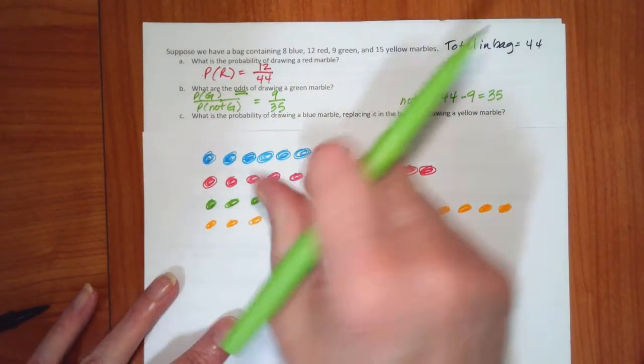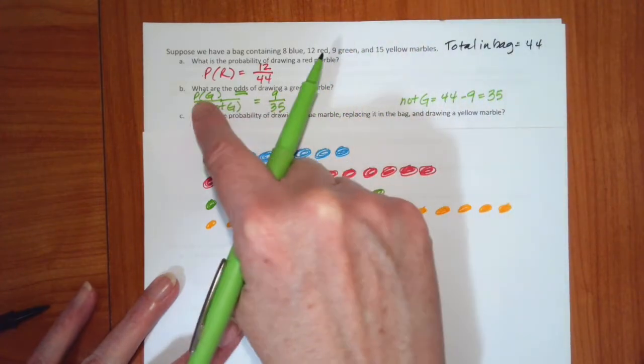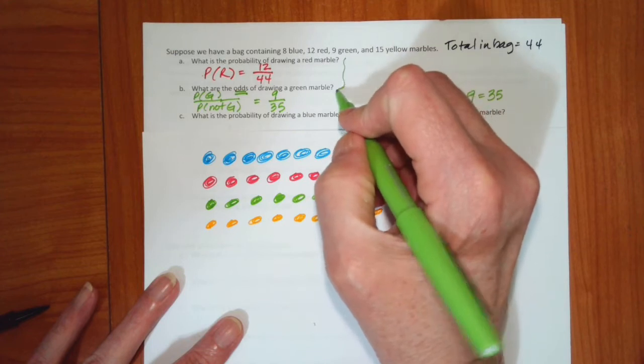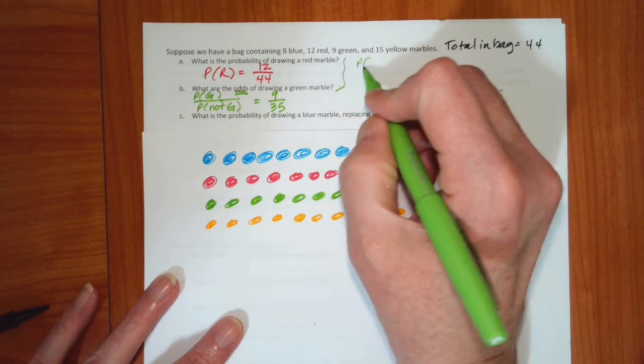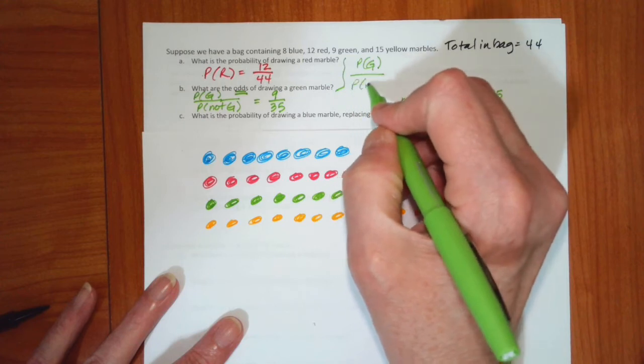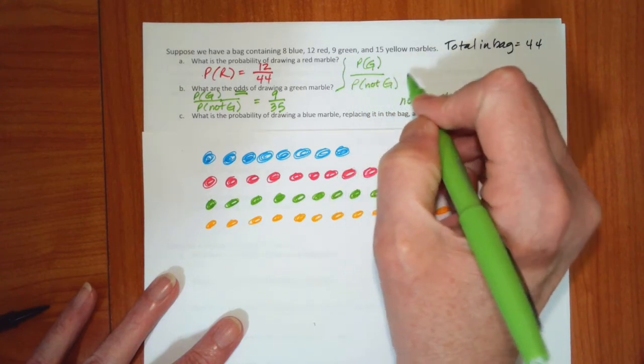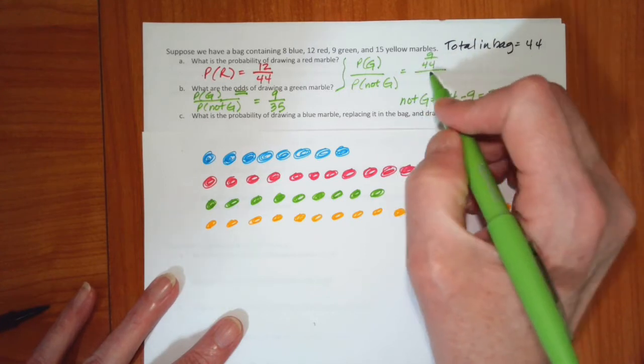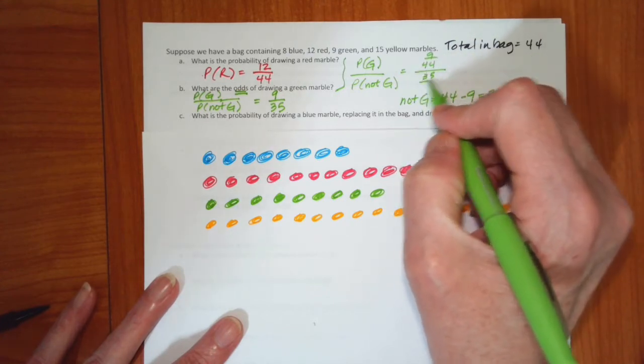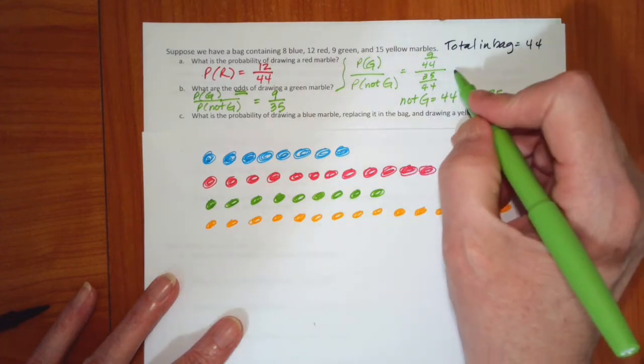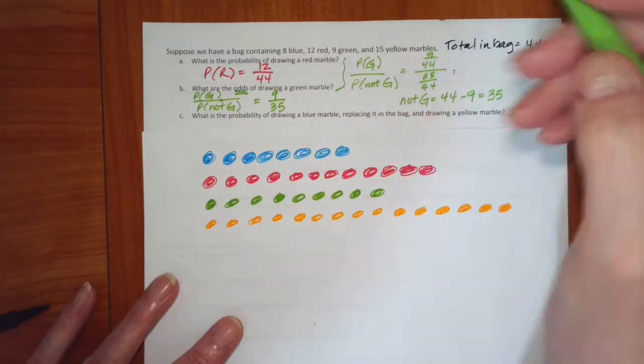This is kind of the shortcut way to do it. The long way to do this is actually the probability of G. If you want to do this the long way, the probability of G divided by the probability of not green is equal to 9 out of 44 divided by 35 out of 44. And if you do that it reduces to 9 over 35.